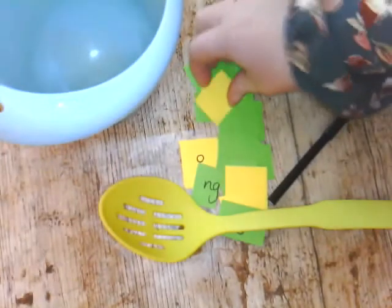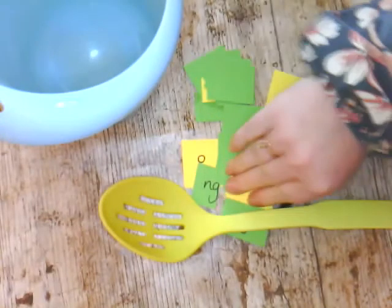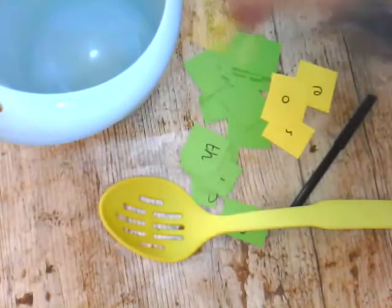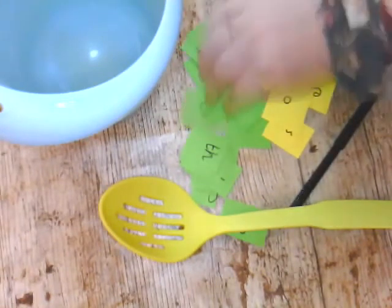Now I've got two different types of colored card because I want to make sure that we keep vowels and consonants different. So I need vowels on one color, as you can see, and consonants on another.